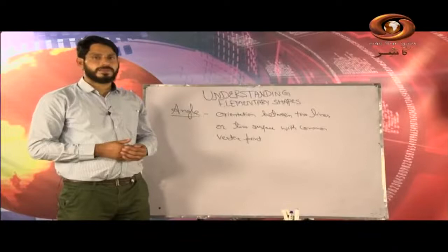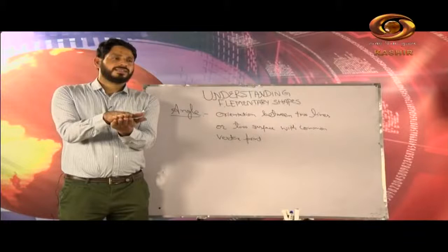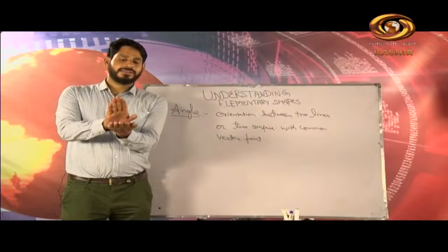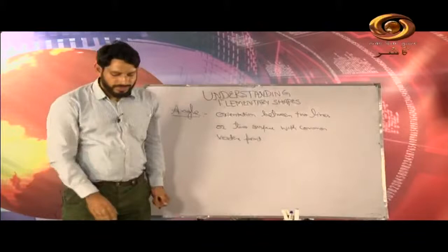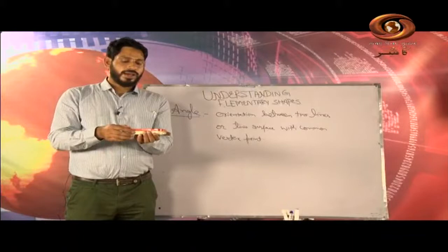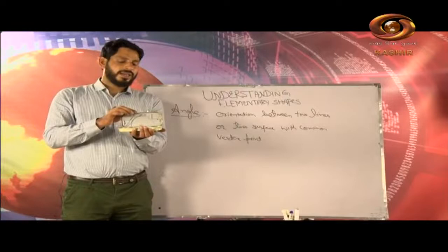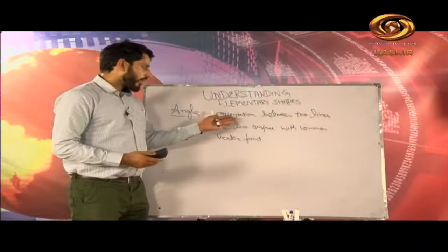What does this statement mean to us? It says orientation between two lines or two surfaces — it is the orientation between two surfaces that makes the angle. Suppose this is one surface — my one hand represents one surface, and my other hand represents the other surface. At the moment, both are lying in the same orientation. Keeping the lower hand fixed and moving the upper hand, we can see that the angle is increasing gradually. The orientation of the upper hand is changing. Similarly, with a geometry box — initially, the upper and lower surface are at the same orientation. As I move the lid, the angle between the two is increasing.